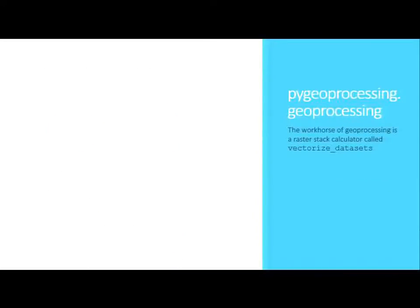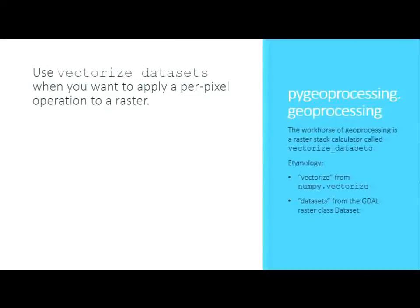The workhorse function is called vectorized_datasets. The name comes from 'vectorized' as in NumPy's vectorized operations, and 'datasets' from GDAL's raster dataset class. You use this whenever you have a per-pixel operation — it's like raster algebra, but it takes a Python function and supports all Python scoping rules including closures. For example, you might write a function that masks wet regions: if precipitation is above 2,000 mm/year, return true, otherwise return false.